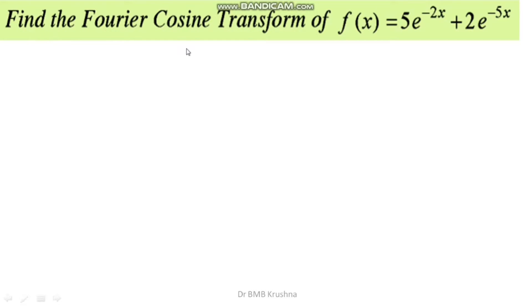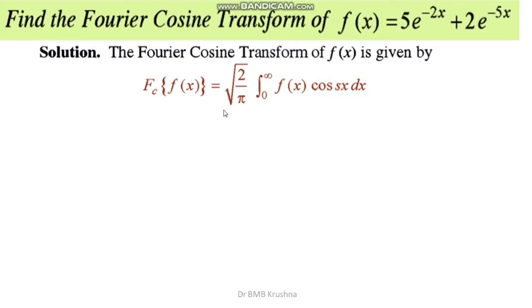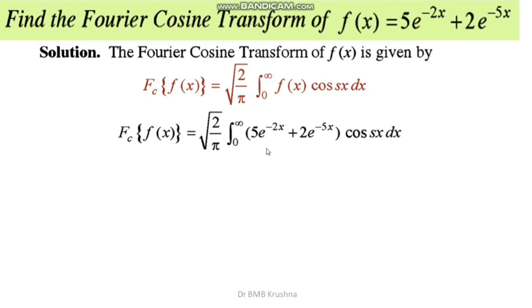Let us discuss the procedure to obtain the Fourier cosine transform of the function f(x) = 5e^(-2x) + 2e^(-5x). The formula for the Fourier cosine transform is: root over 2 by pi, integral from 0 to infinity of f(x) cosine(sx) dx. Here f(x) is replaced with the given function 5e^(-2x) + 2e^(-5x).